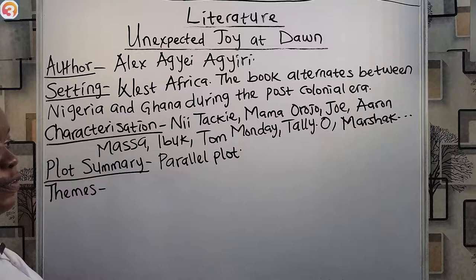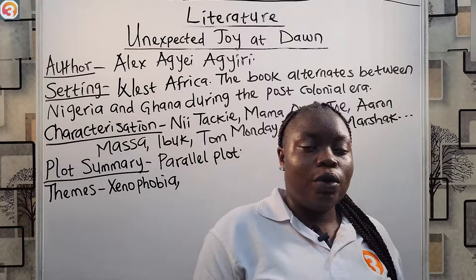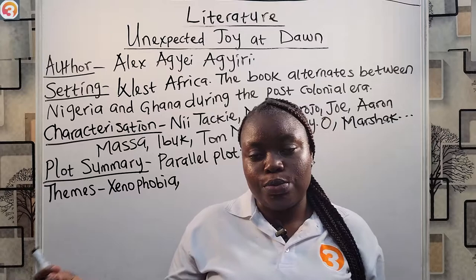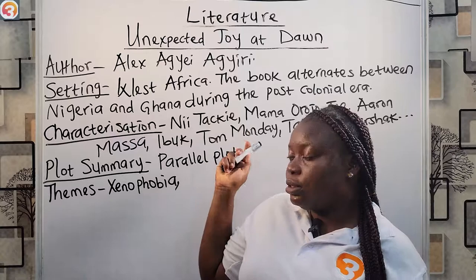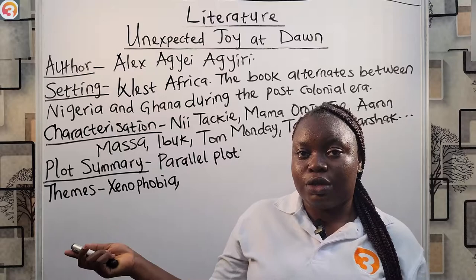Then we have the themes. First up, we have the theme of xenophobia — xenophobia simply means fear or hatred for foreigners. This theme is portrayed a lot in the book: first in the deportation order that separates the siblings, and also in the fact that Ghanaians are not happy with Nigerians and other foreigners among them. The same goes for Nigerians lashing out at Ghanaians in their midst. We also have the theme of identity crisis.